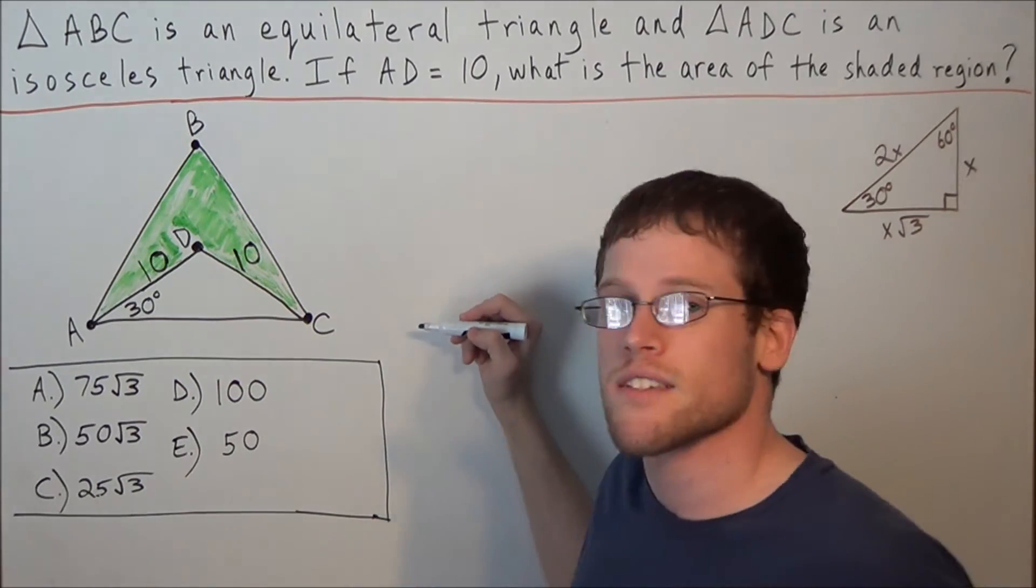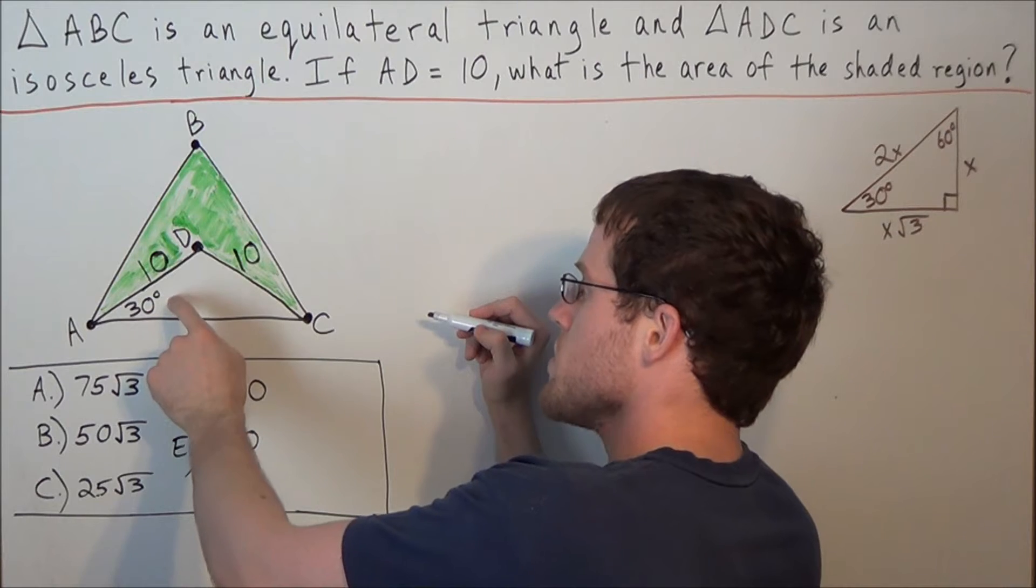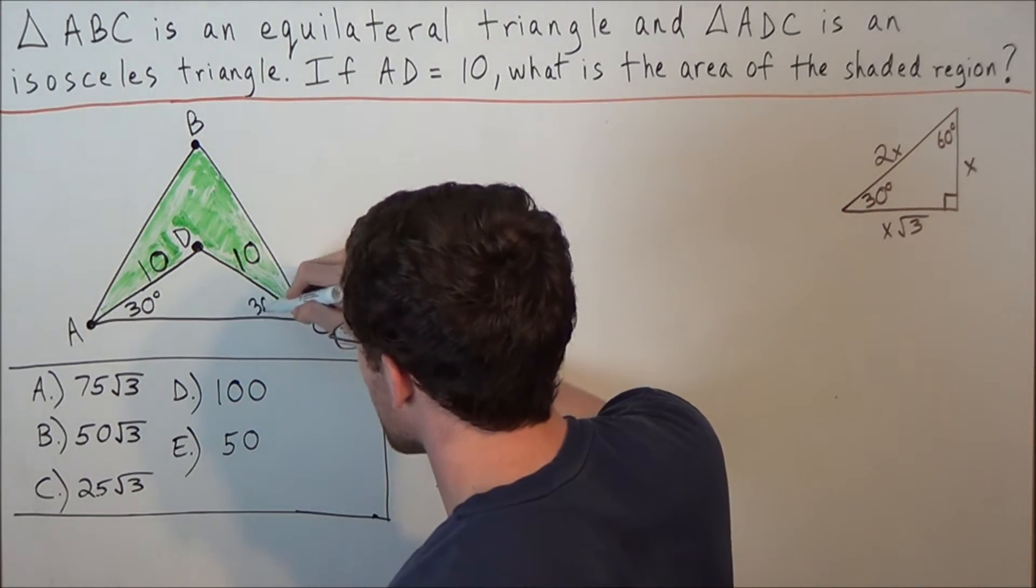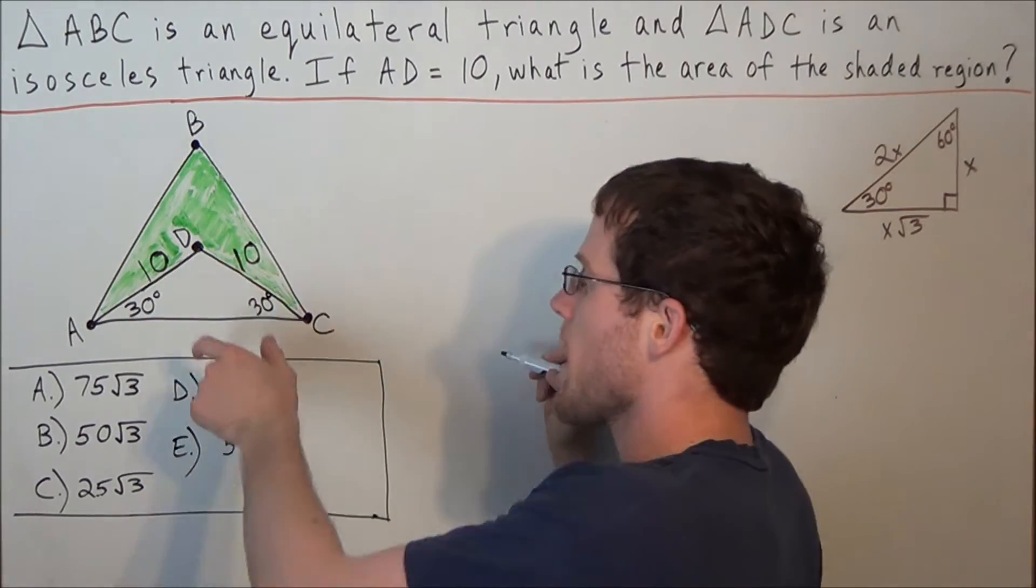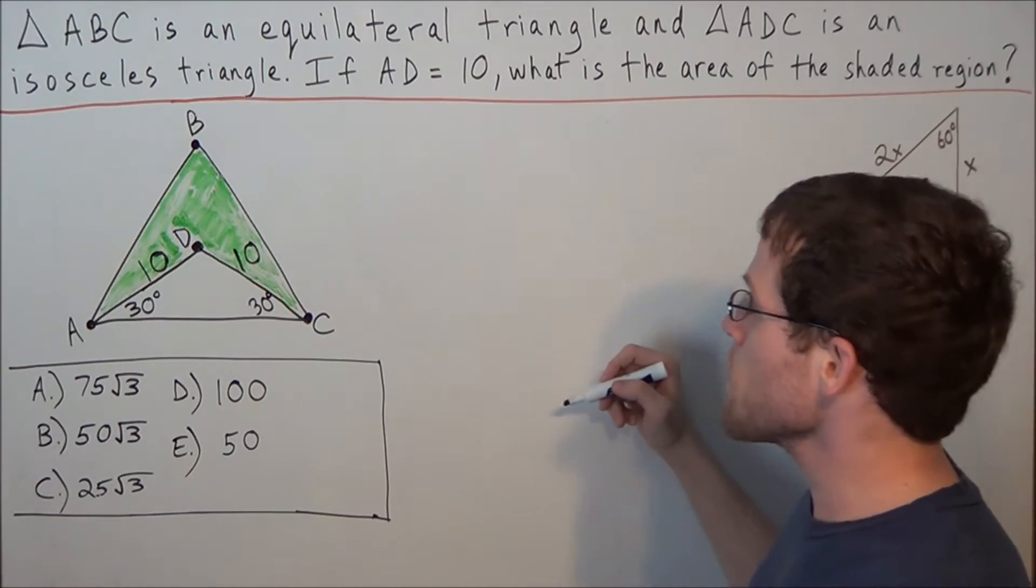And also, by the isosceles triangle theorem, if this angle here is 30 degrees, then angle ACD would also be 30 degrees, because the angles opposite the congruent sides are also congruent.